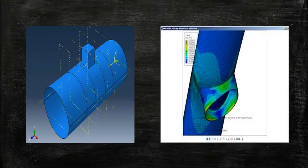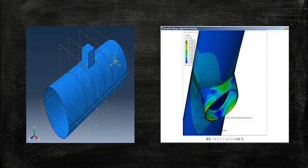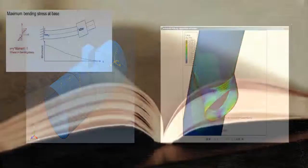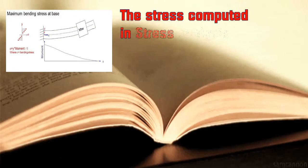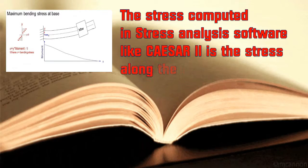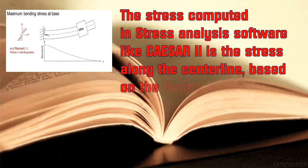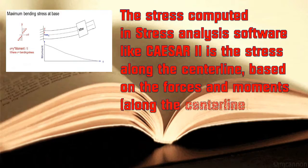Let us consider the attachment, which may be circular or rectangular, connected to the cylinder. The stress computed in stress analysis software like Caesar 2 is the stress along the centerline, based on the forces and moments along the centerline.